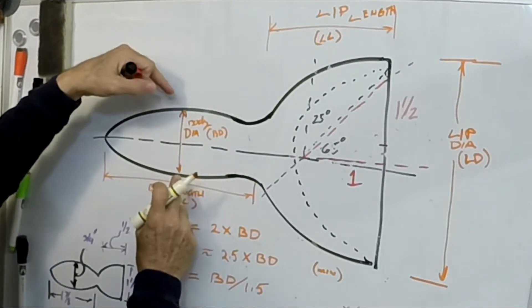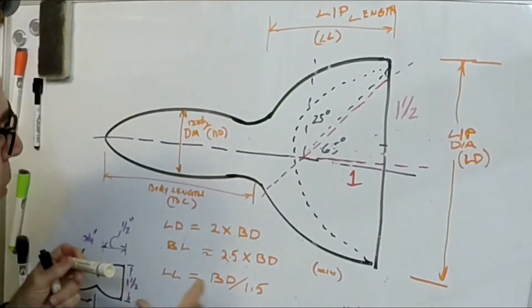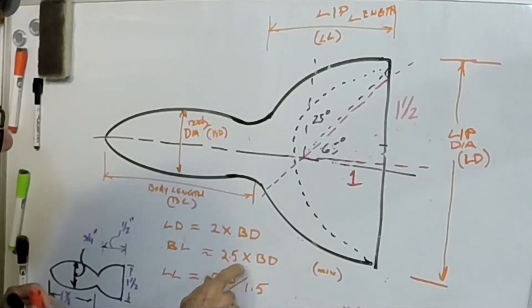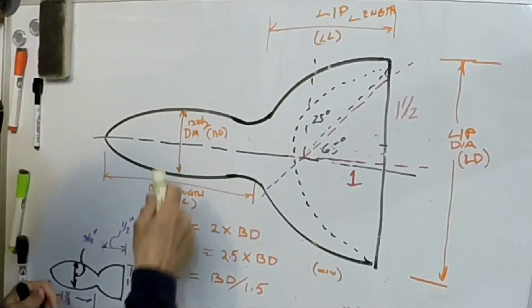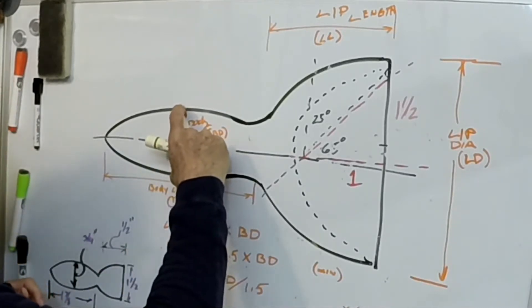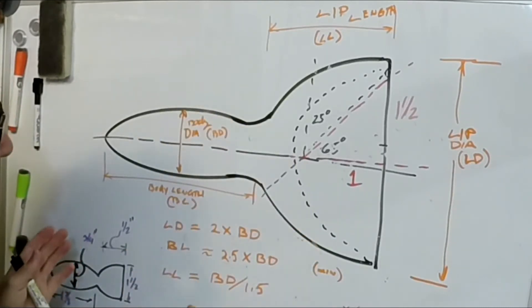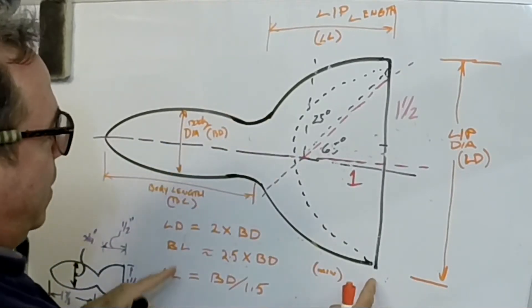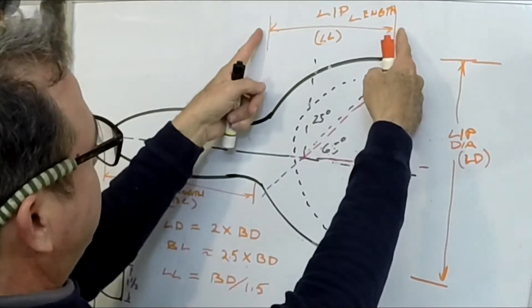So you can see that visually proportionally, the body length should be about two and a half times the body diameter. So if you're going to go three quarters of an inch, then you take three quarters times two and a half and that gives you this length. The lip length, which is the distance from here to here.